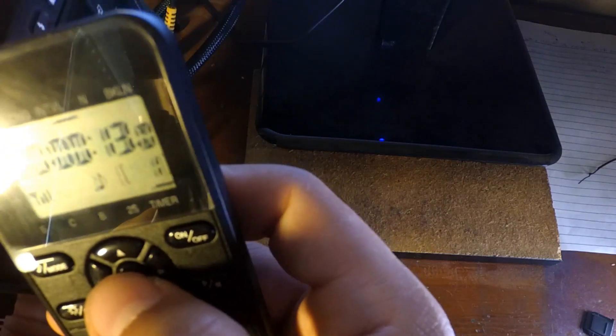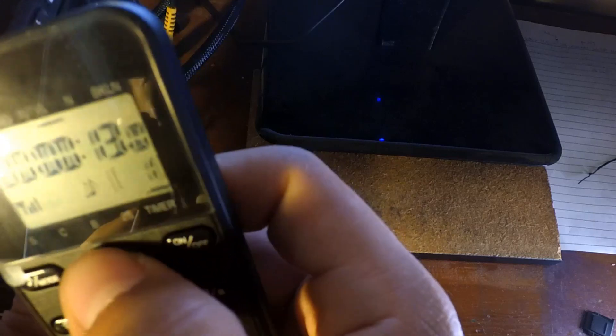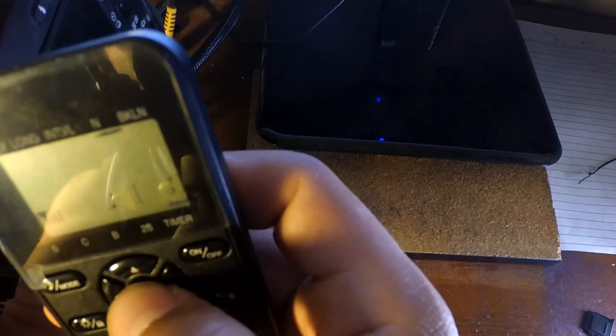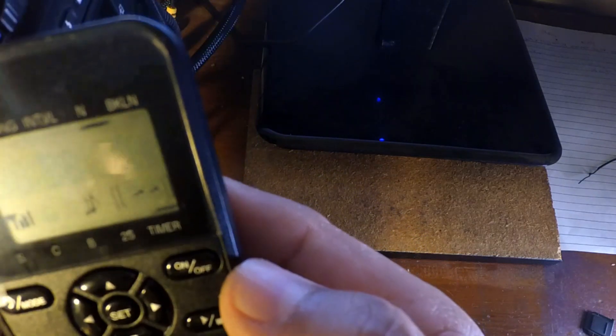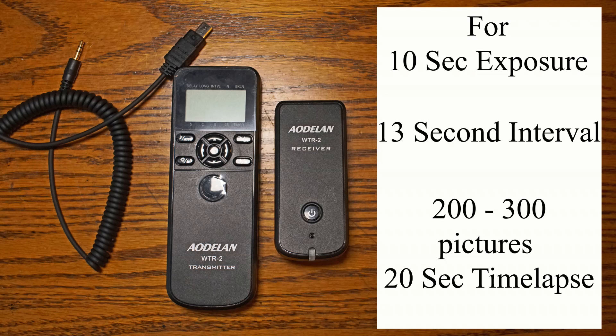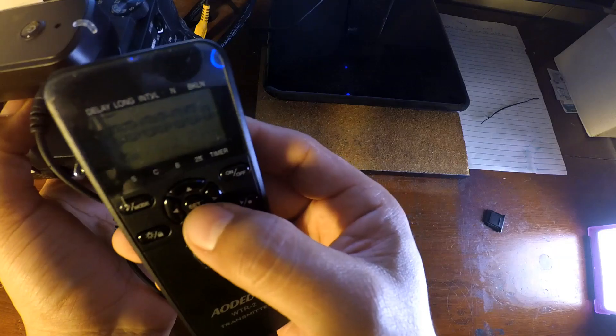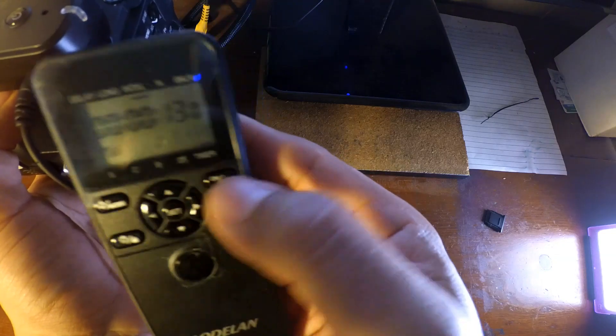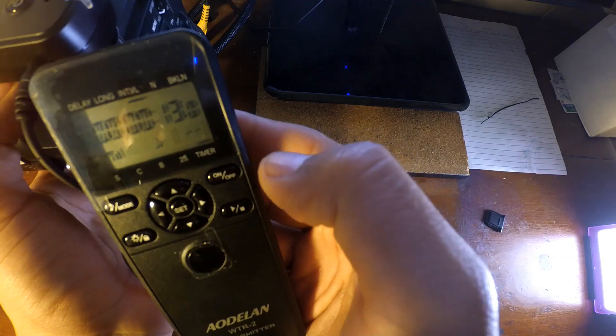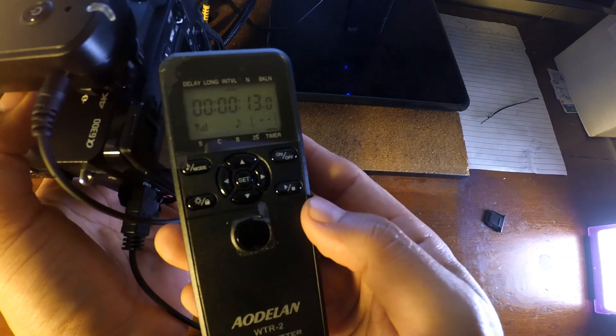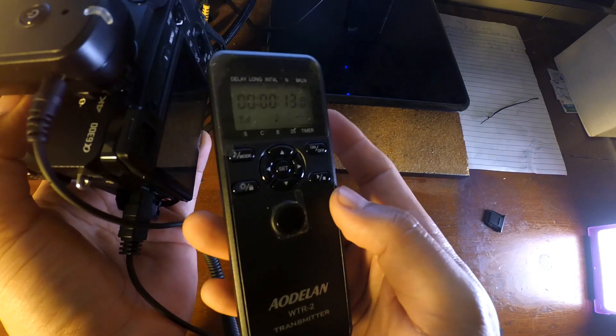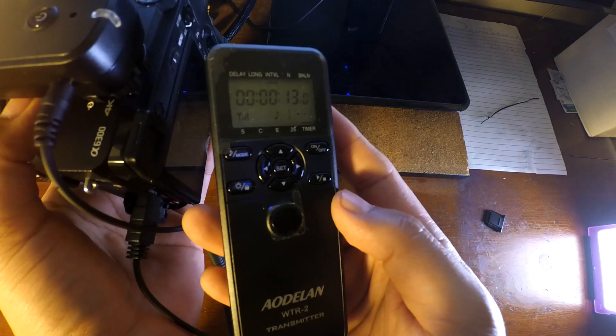Down here, see the two little dashes under the number? That means it's infinite — you control when you want the time lapse to stop. These are my settings for the time lapse you just saw. Leave it on 13, and have the number on the dashes so you stop it when you're ready. You're going to need at least 200 to 300 photographs — let it fire off into the storm for about 200 to 300 photos for the best results.